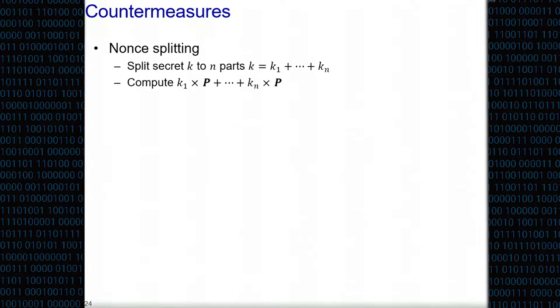One natural approach would be to secret share the nonce into n nonces using additive secret sharing. Compute k_i cross p separately and then combine the result into k cross p. That is a valid countermeasure because in order to deduce that something is a 0 in k, I need it to be a 0 in all k_i's from 1 to n. My life is harder, I need to collect more signatures. Of course, performance now drops because previously we were computing one k cross p, which was hard enough, now you're computing n of them.